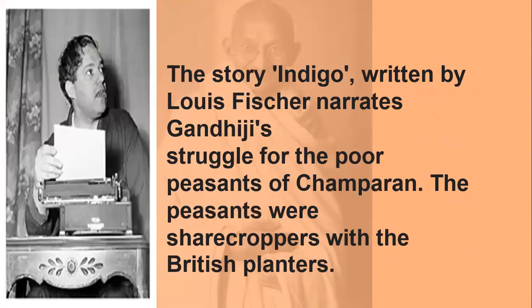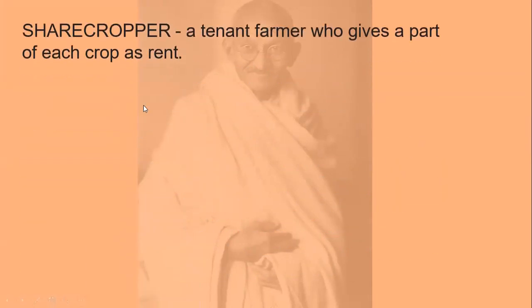The story 'Indigo,' written by Lewis Fisher, narrates Gandhiji's struggle for the poor peasants of Champaran, which is located at the foothills of the Himalayas. The peasants were sharecroppers with the British planters. A sharecropper is a tenant farmer who gives a part of each crop as rent — but in this lesson, the sharecropper surrendered his entire harvest of indigo plant to the British landlords.